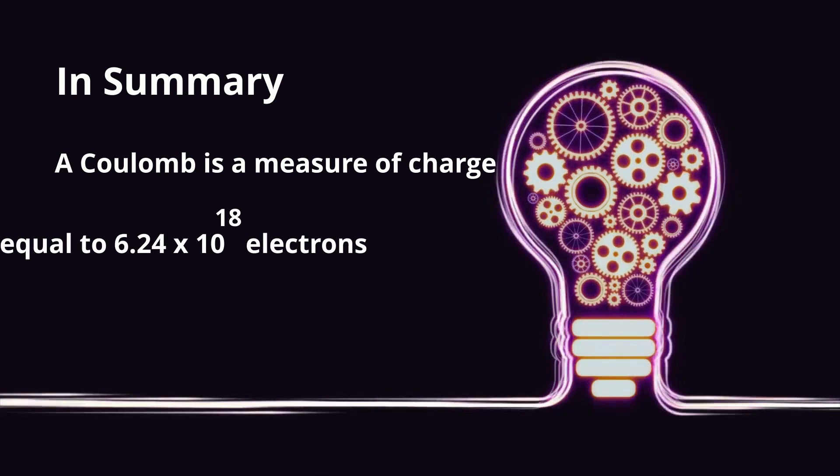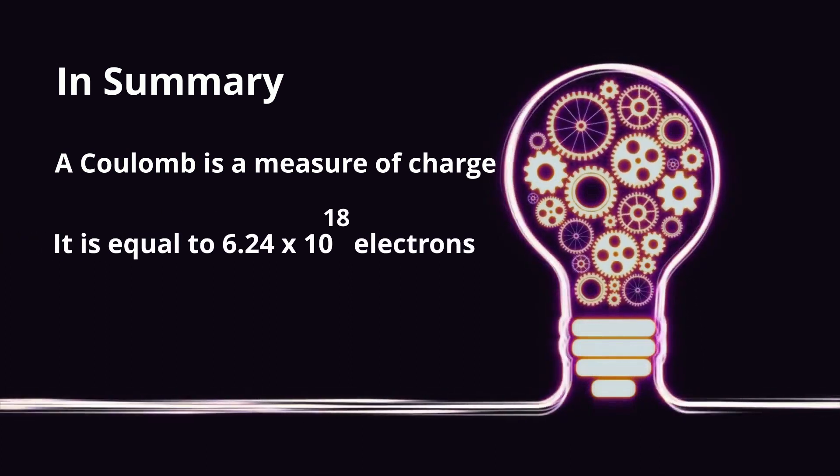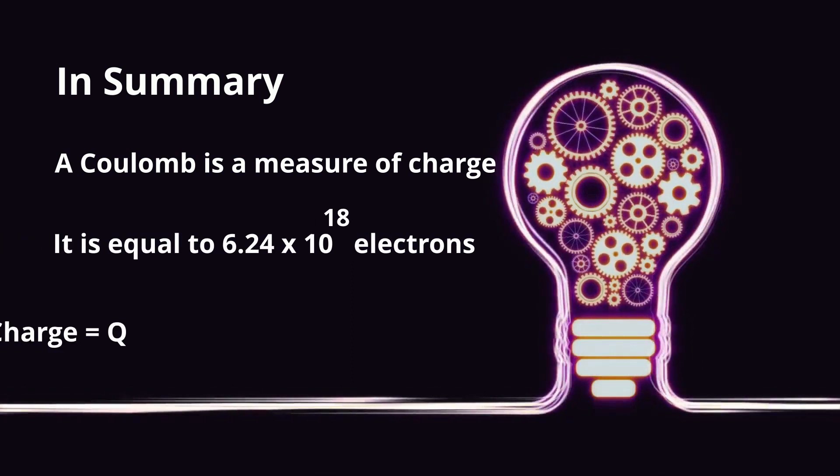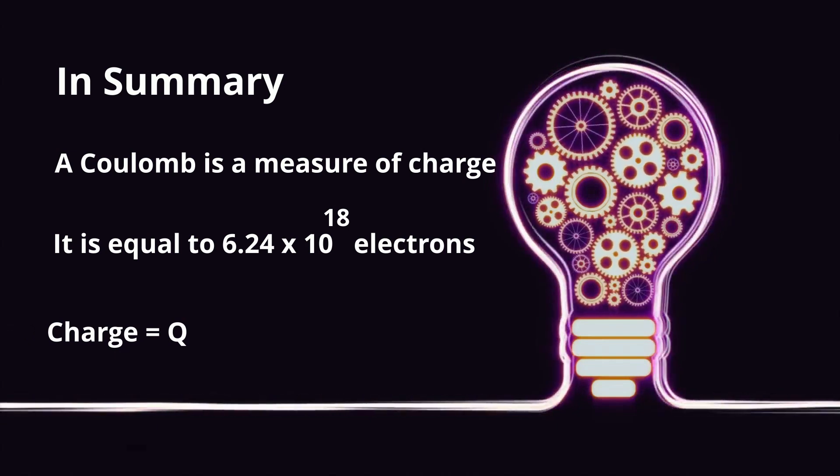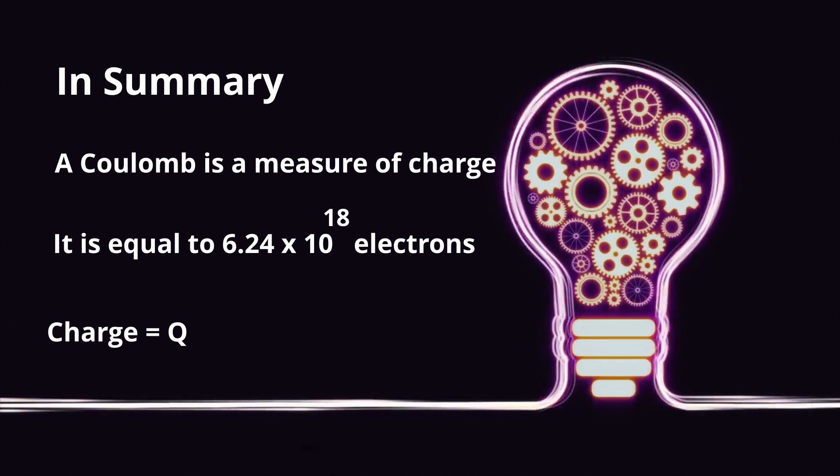In summary, a Coulomb is a measure of charge. It is equal to 6.24 times 10 to the 18 electrons, and charge is represented with the letter Q.